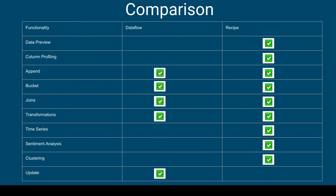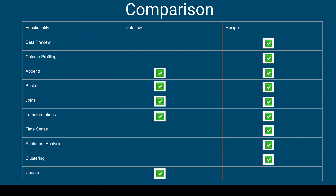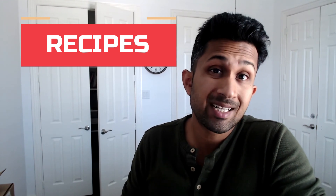Here is a comparison of all the functionalities that data flow and recipes have to offer. In recipes, you can quickly get a preview of your data and do column profiling — see if columns have missing values, see the distribution of values, and so on. The append functionality is available in both data flow and recipes. You can bucket information in both. Joining information is also available in both. Compute transformation — creating a calculated dimension — is available in both data flow and recipe. Time series analysis, sentiment analysis, and clustering are specific to recipes. Update is only available in data flow.